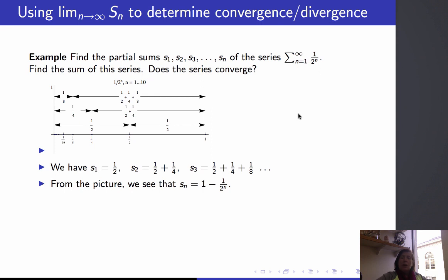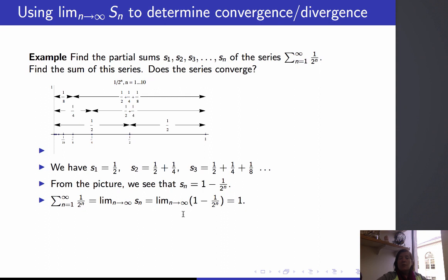So we see that the nth partial sum is equal to 1 minus 1 over 2 to the n. By definition, this series converges if the limit of the sequence of partial sums exists and is finite. We can see that this is the limit as n goes to infinity of 1 minus 1 over 2 to the n, which is 1. So we say this series converges to 1.